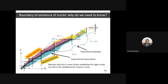The dashed lines are theoretical estimates and the points are experimental observations. For elements up to around calcium, theory predicts we can have more nuclei than have been experimentally observed. This void needs to be filled in — this is one reason we must keep discovering nuclei as we increase the neutron number.